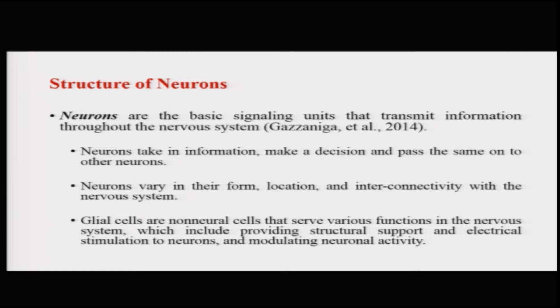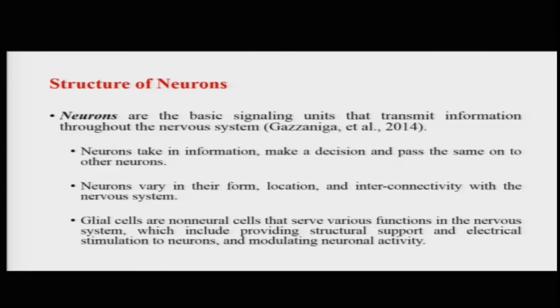Neurons are cells mainly responsible for generating and transmitting information in reaction to any kind of physical or chemical stimulation. Neurons take in information, make a decision about whether this information has to be passed further or not, and then pass the same on to other neurons.